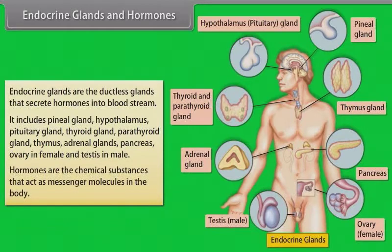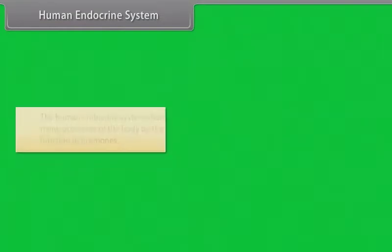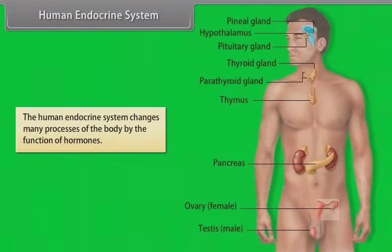Hormones are the chemical substances that act as messenger molecules in the body. The human endocrine system changes many processes of the body by the function of hormones.